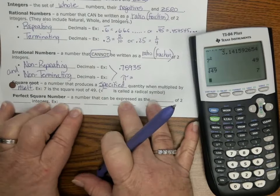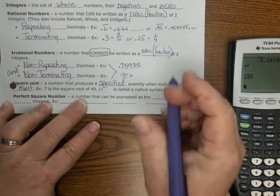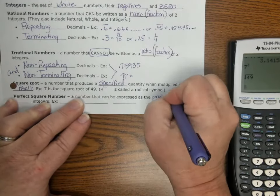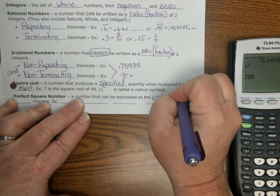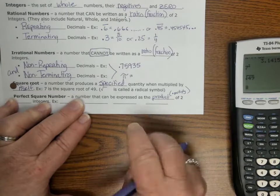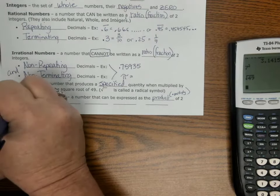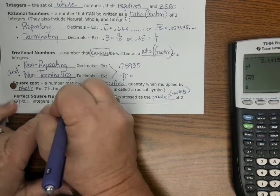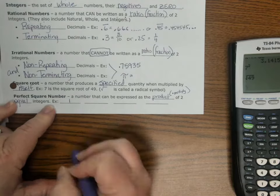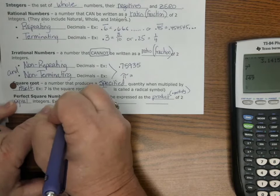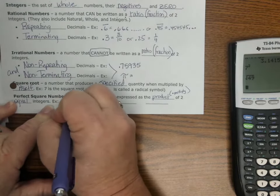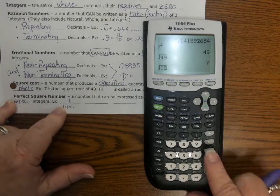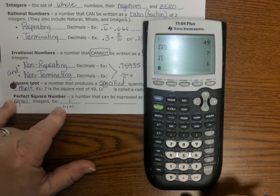Perfect square number, a number that can be expressed as the product. What does product mean? Product means to multiply, of two equal integers. The number one is a perfect square, because when I do 1 times 1, I get 1. And when I put in 2nd square root 1, look at what I get. 1.